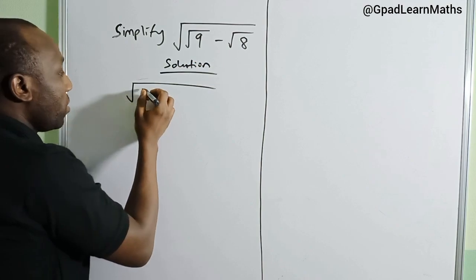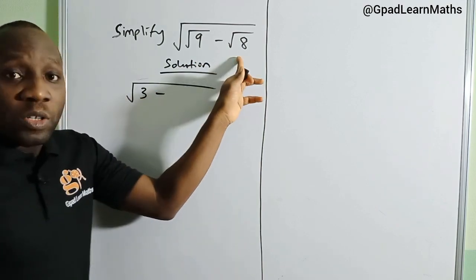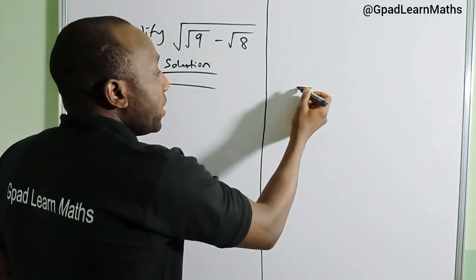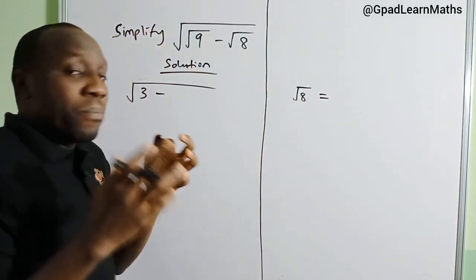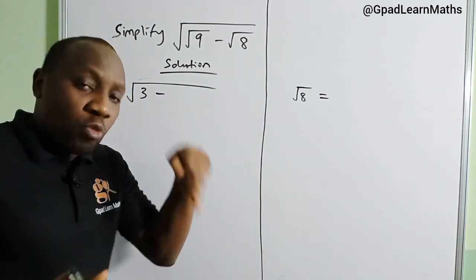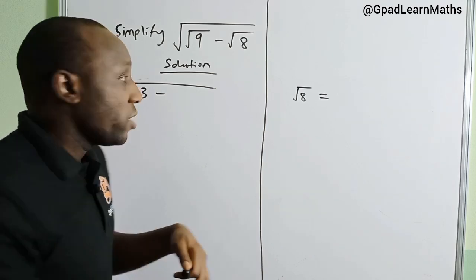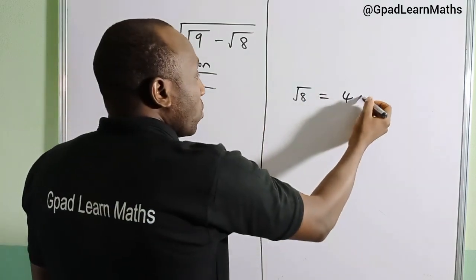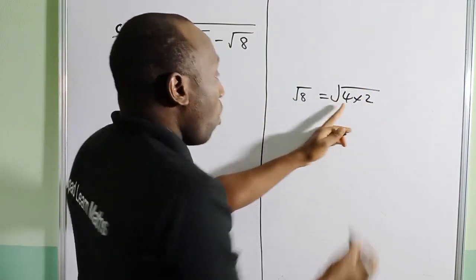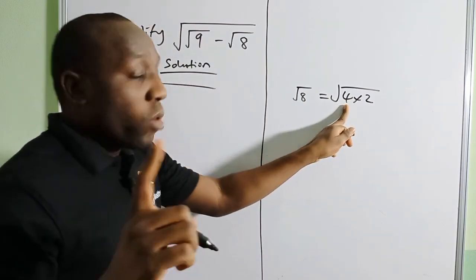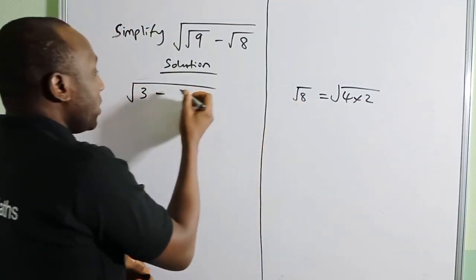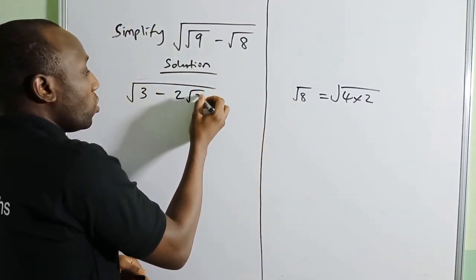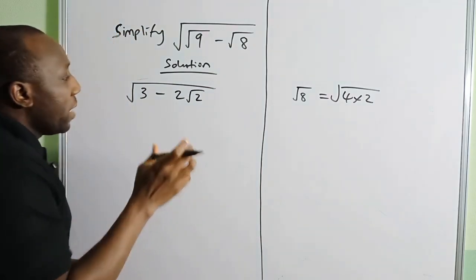What about √8? 8 is not a perfect square, but we can break it down to two numbers where one is a perfect square. That would be 4 times 2. Four is a perfect square, and √4 = 2, so √8 = 2√2. Now the next thing we want to do is see how we can make this form an algebraic identity.